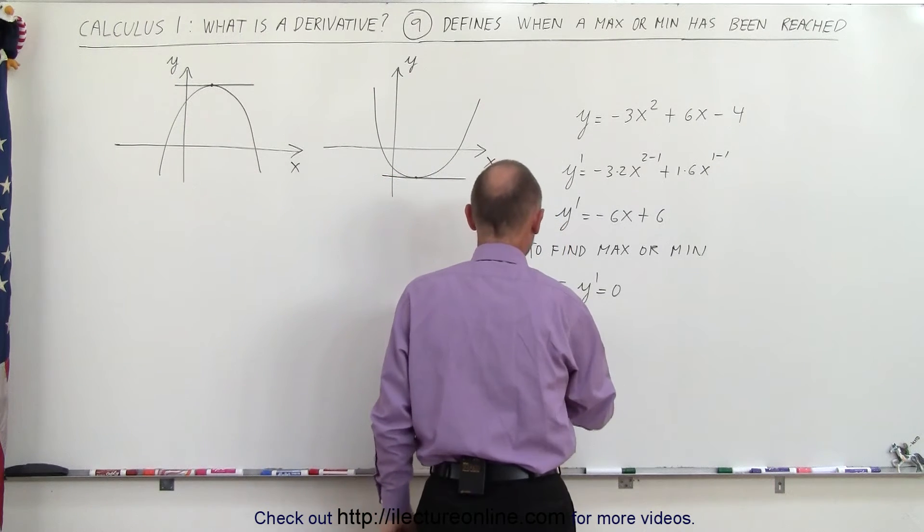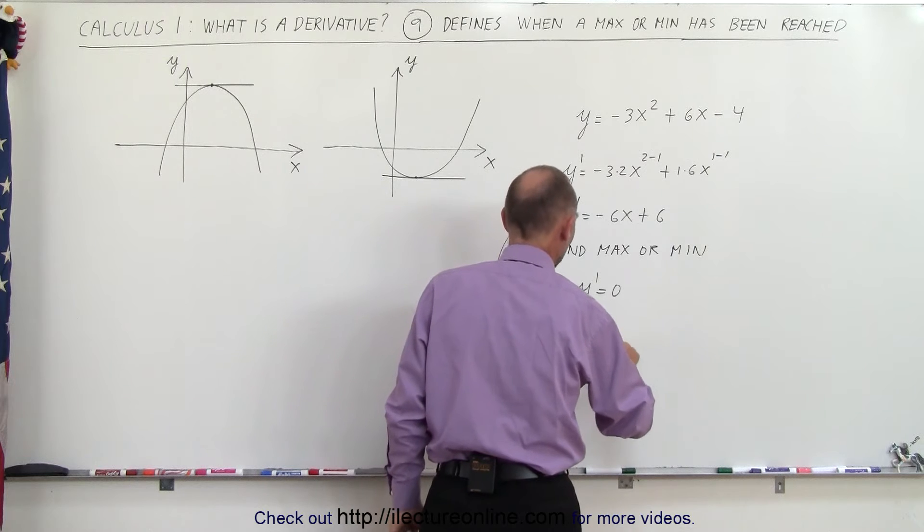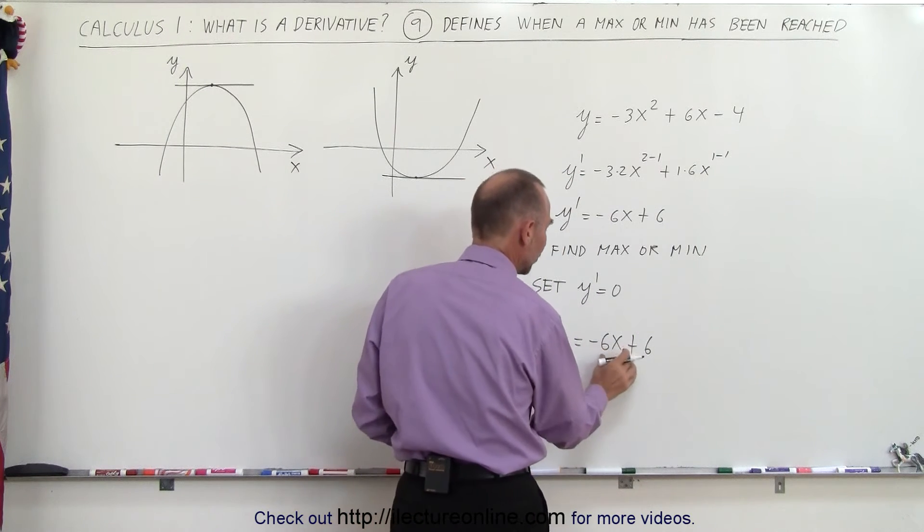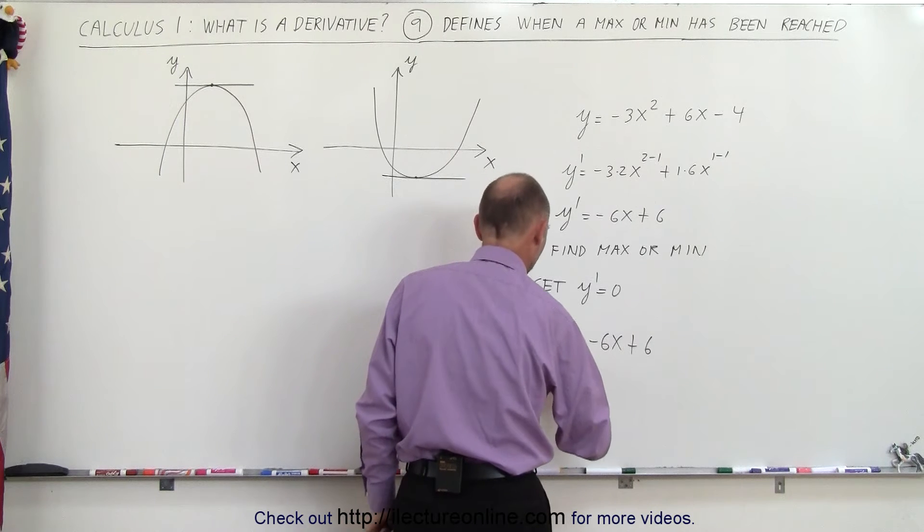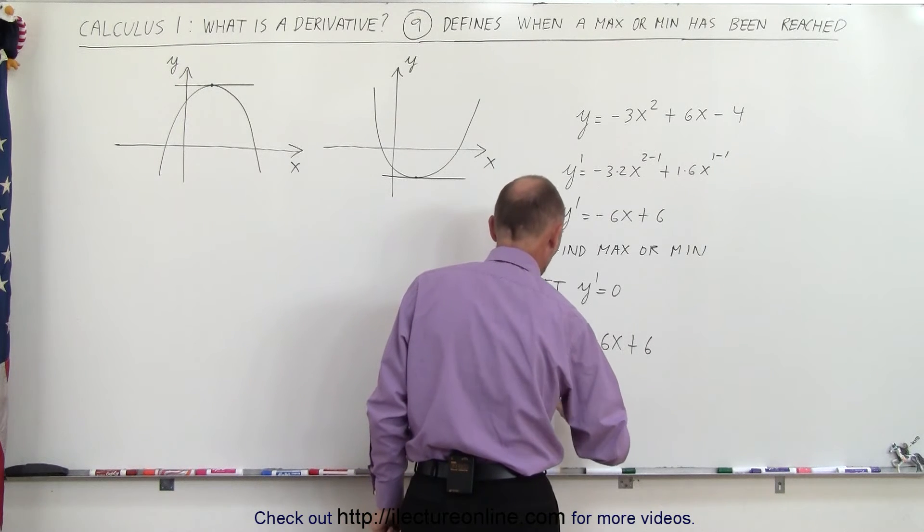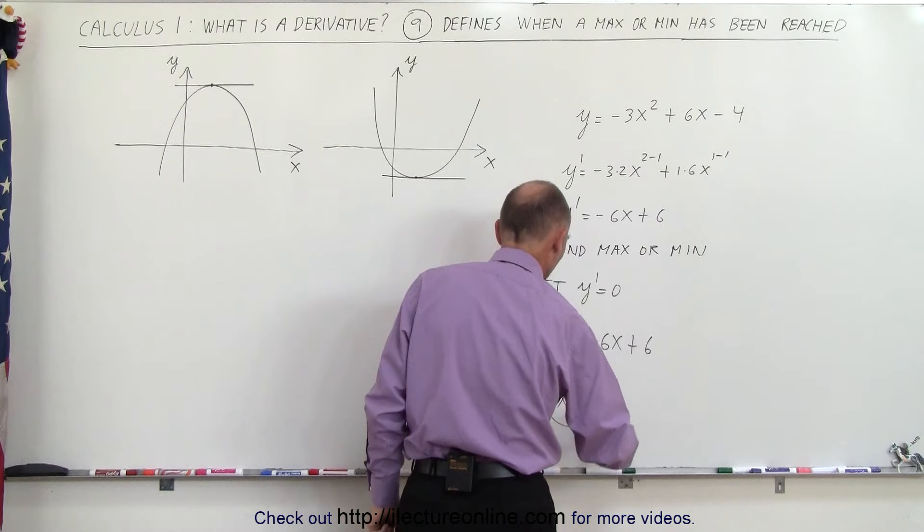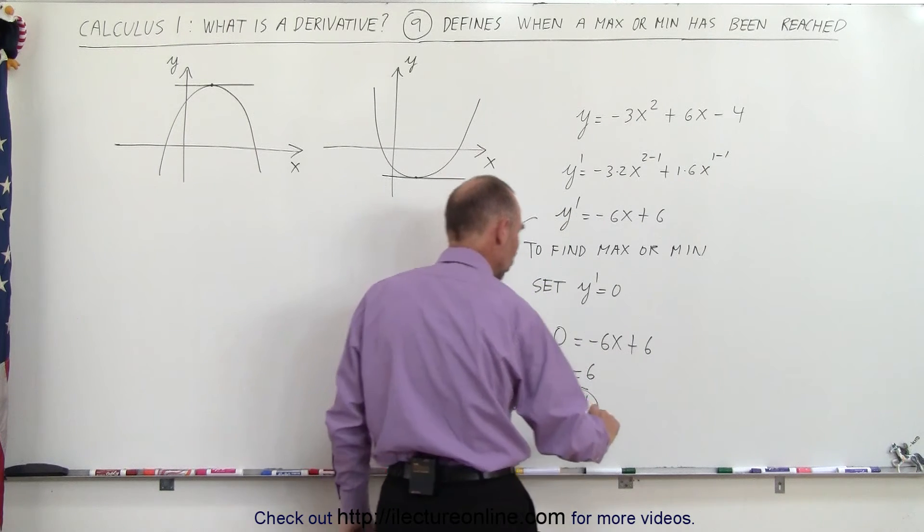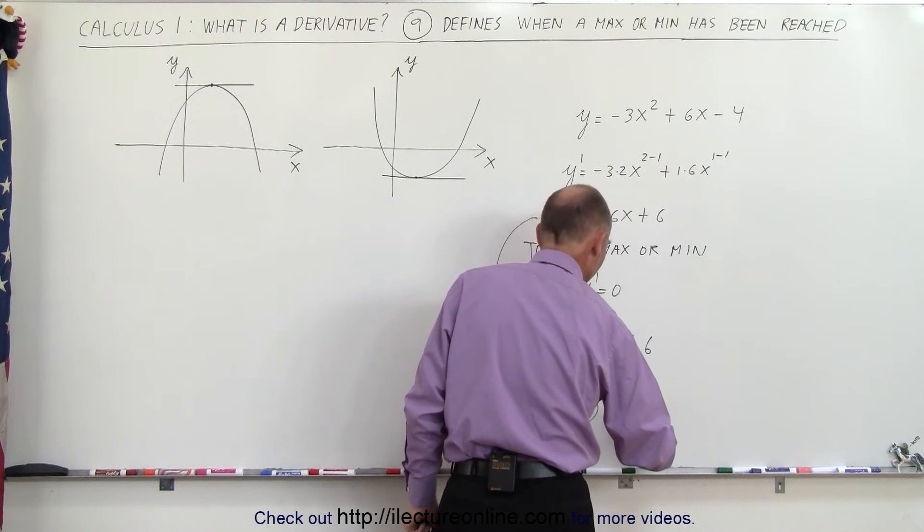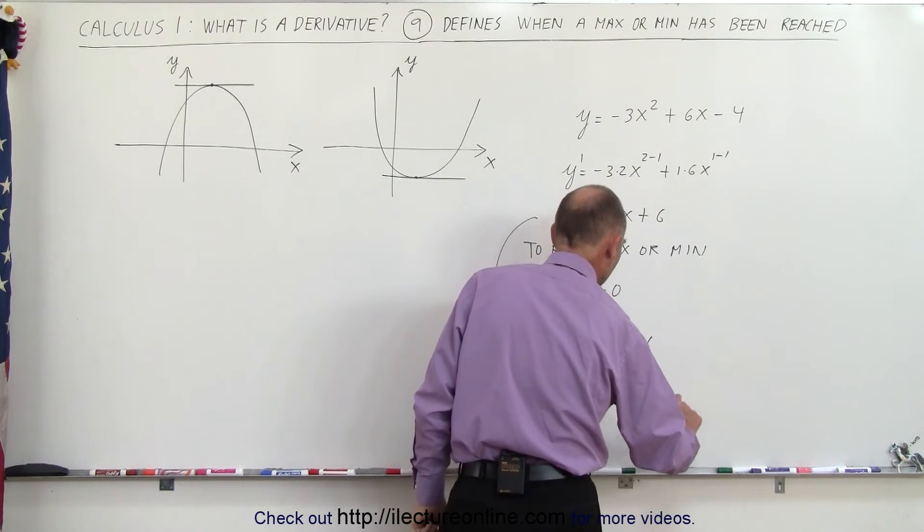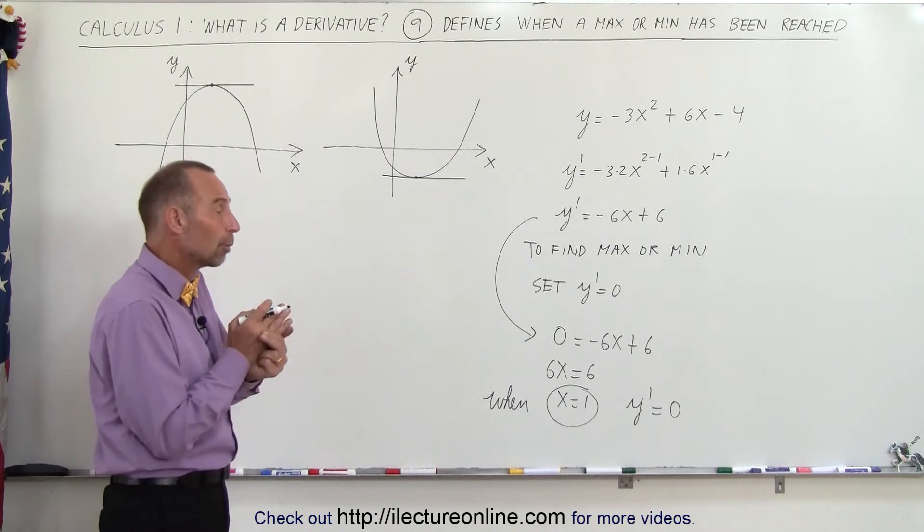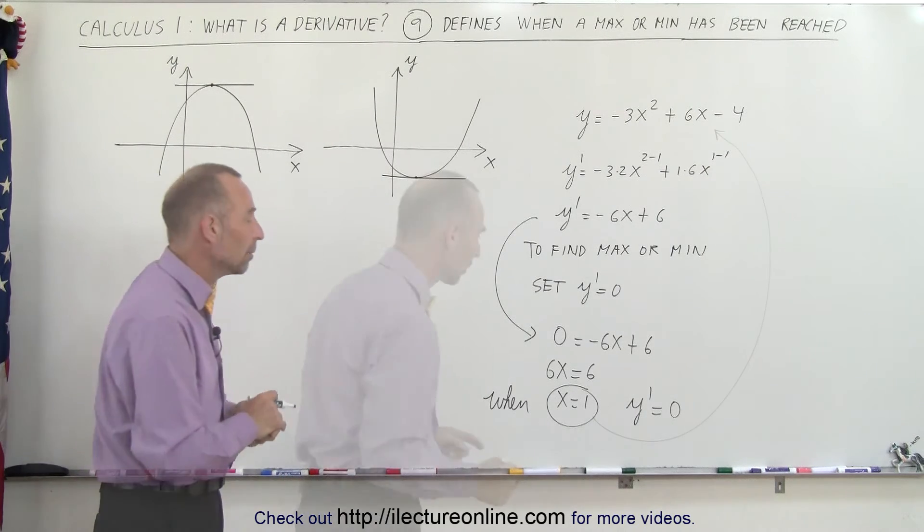So when we do that, we go 0 equals minus 6x plus 6. Moving the 6x to the other side we get 6x is equal to 6, or x is equal to 1. So when x equals 1, the derivative y prime equals 0. The derivative is zero, which means that's where the slope is zero—that's where we find either the maximum or the minimum.